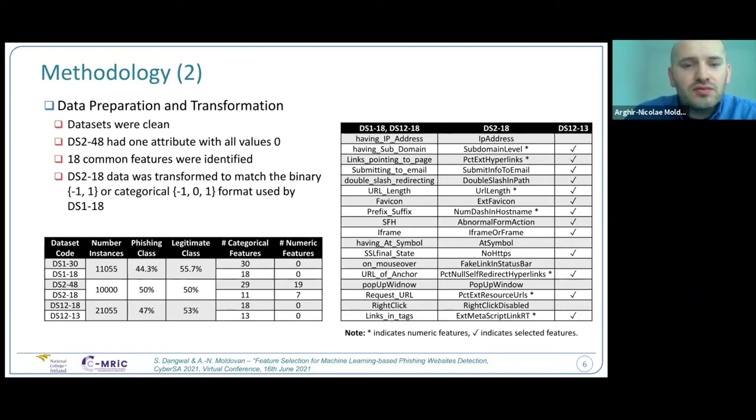Basically here we identified 18 common features. They use different names, but when we identified them, we did it based on the data descriptions provided by the authors. The data transformation was focused on transforming the second dataset DS-218 to match the binary or categorical format. In total, when we combine the two datasets, within DS1, what we encoded as DS1-18 with 18 features, had over 20,000 instances. 47% of them were phishing class and 53% they were legitimate class. The second dataset also contains some numeric features, but in the data transformation process, those numeric features were encoded as binary or categorical.